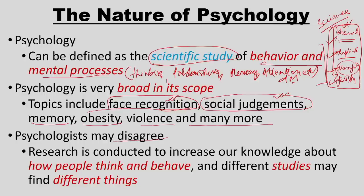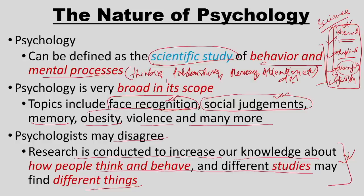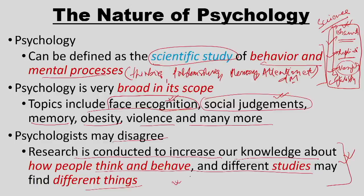Another interesting thing is that psychologists must disagree. Research is conducted to increase our knowledge about how people think and behave, and different studies may have different findings. Psychologists not only study — they design experiments to understand the psychological process behind any act, bring up theories, and later do different kinds of studies which sometimes negate each other or add to each other. That is why the nature of psychology is scientific — we can not only observe, replicate and verify, but also falsify.